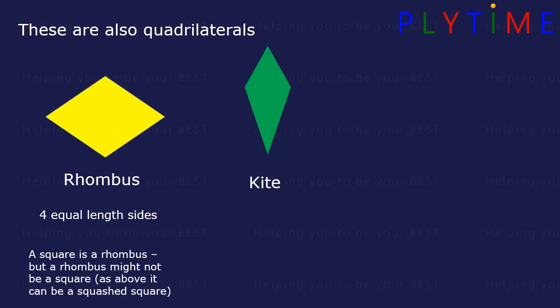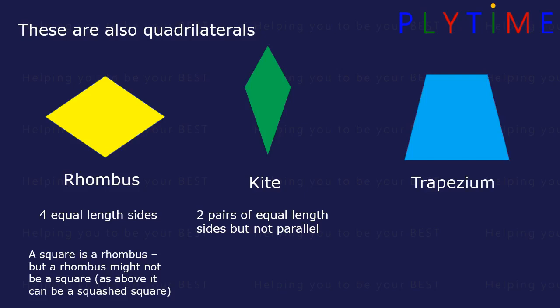A kite has two pairs of equal length sides, but these are not parallel. Or a trapezium — this has one pair of parallel sides and one pair of equal length sides.